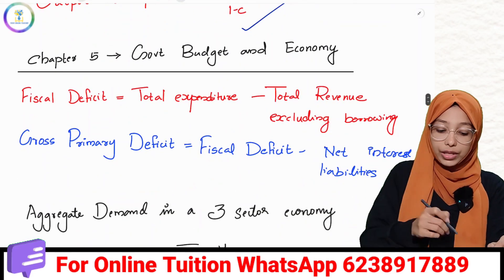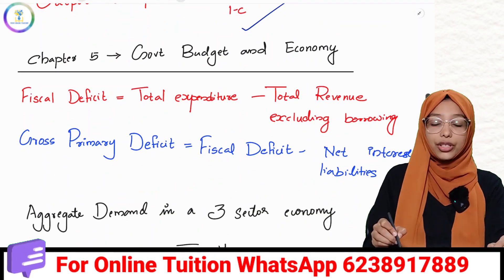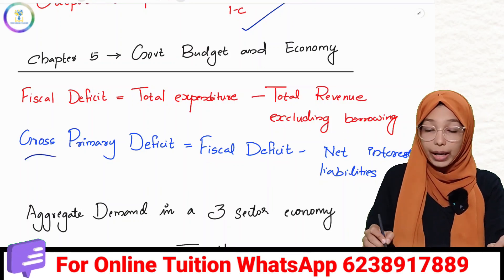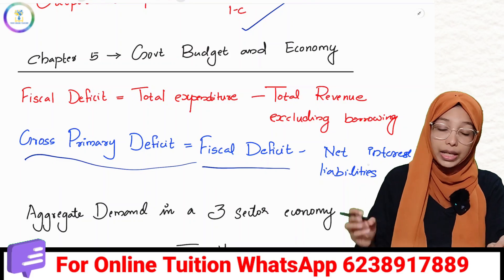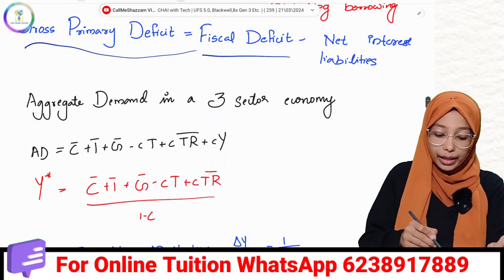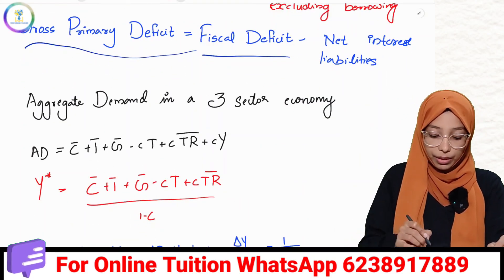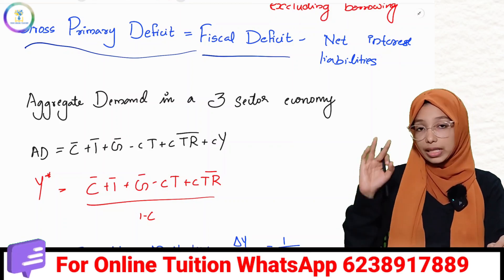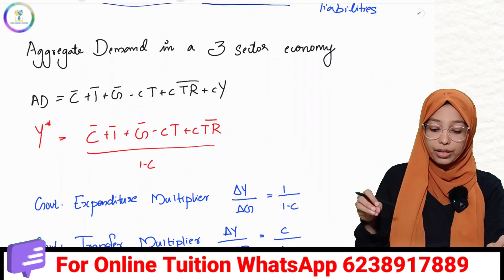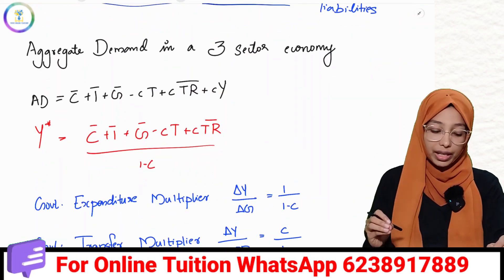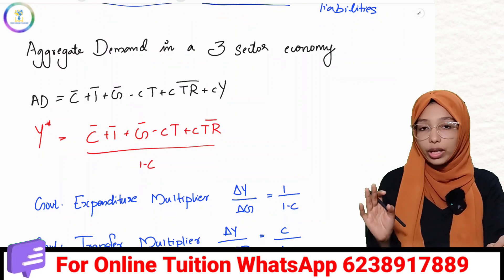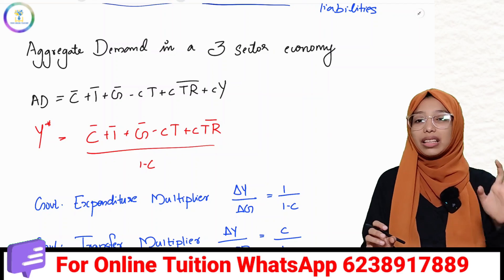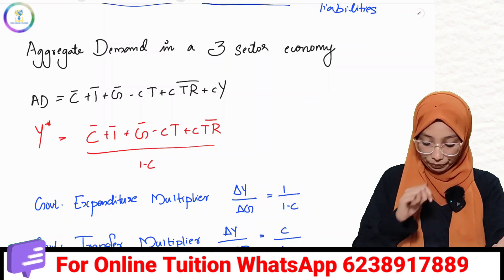Chapter 5, Government Budget and Economy. Fiscal deficit is total expenditure minus total revenue excluding borrowing. Gross primary deficit is fiscal deficit minus net interest liabilities. In three sector economy, aggregate demand is C bar plus I bar plus G bar minus cT plus cTR bar plus cY. Equilibrium is C bar plus I bar plus G bar minus cT plus cTR bar divided by 1 minus c.